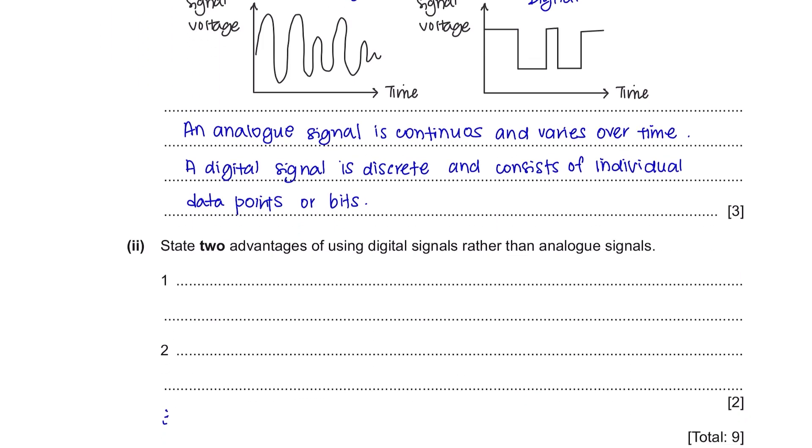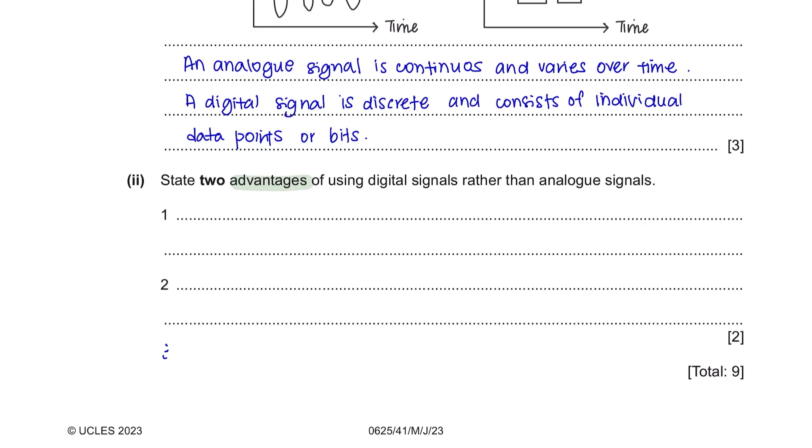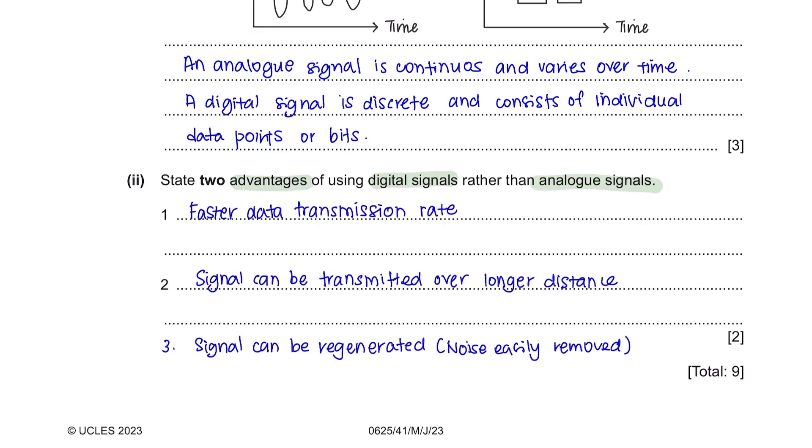Part 2. State two advantages of using digital signals rather than analog signals. These are some of the advantages of using digital signals rather than analog signals. Since this question only gives you two marks, only two points are required but I've given you some extra for reference.